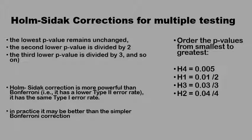In the Holm-Šídák technique, you leave the smallest p-value as it is, because it's very small anyway. The second smallest is divided by two — so rather than being one percent, it would be half a percent. The third is divided by three, and the fourth largest is divided by four, and so on until whatever number of tests you have run on the same output variable. This way, you adjust the p-value differently — not equally like the Bonferroni — depending on the rank of the p-value in ascending order.